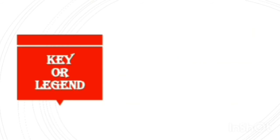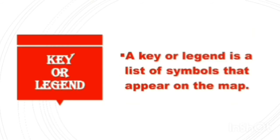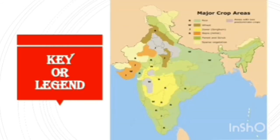Next, key or legend. A key or legend is a list of symbols that appear on the map. Observe this map. The keys are given at the top of the map.